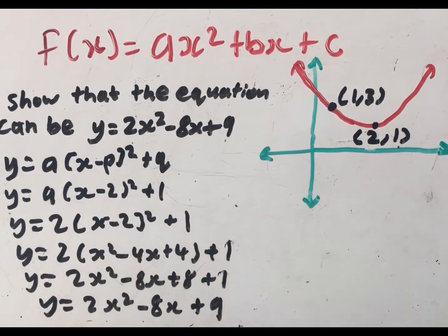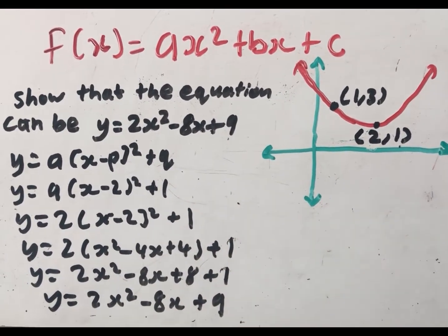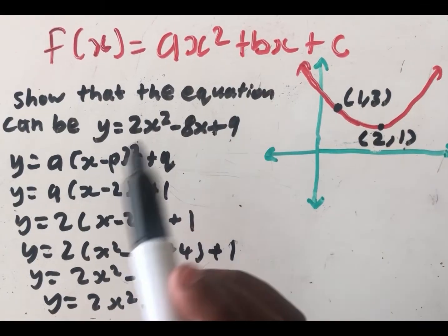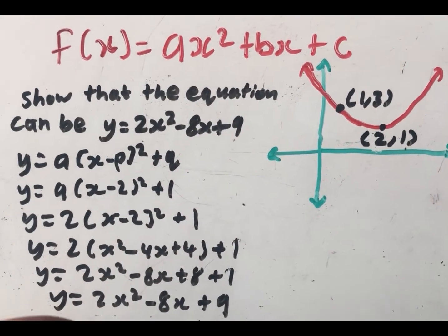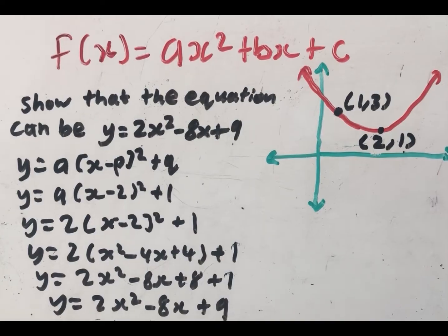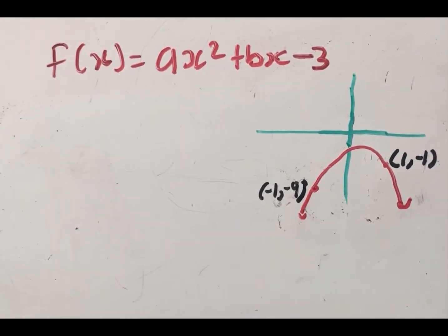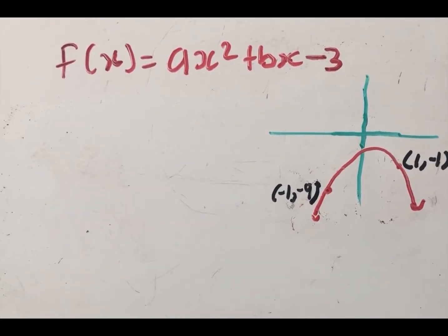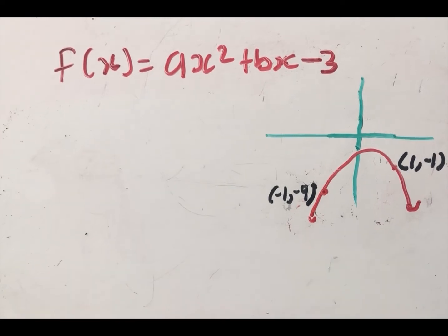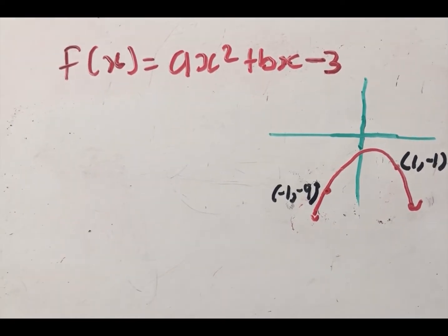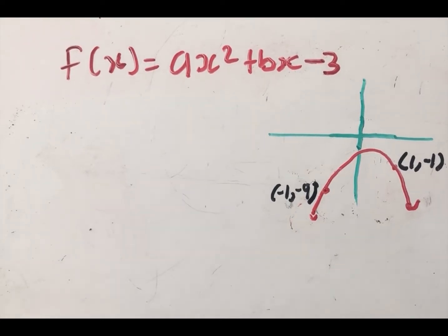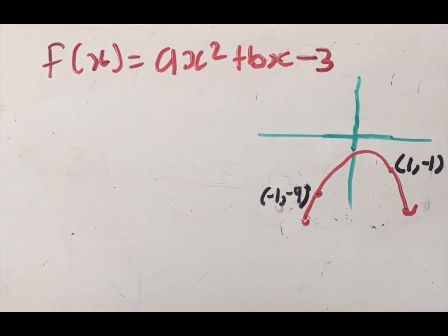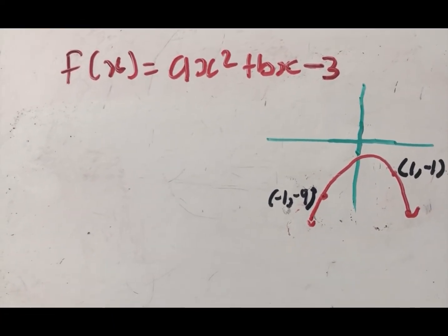So we're done with three unknowns. Remember: three unknowns always uses either the x-intercept form or the turning point form. Now we deal with two unknowns. When there are two unknowns, there will be two points given on the graph. We substitute both points to create simultaneous equations.